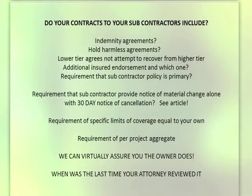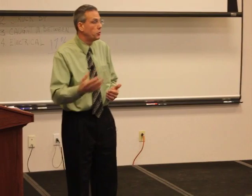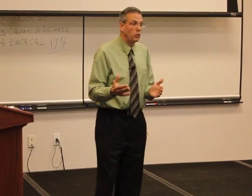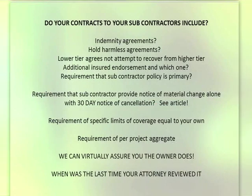Does your subcontract include an indemnity agreement? Does it include a hold harmless agreement? Does it specify an additional insured endorsement, and which endorsement is it specifying? Is it outmoded? I have one contractor who still requires the CG 2010-1185 — it's not really an available endorsement anymore. Does it require that the subcontractor's policy is primary? Is there a requirement for a 30-day notice of cancellation with a material change endorsement provided with that certificate of insurance?